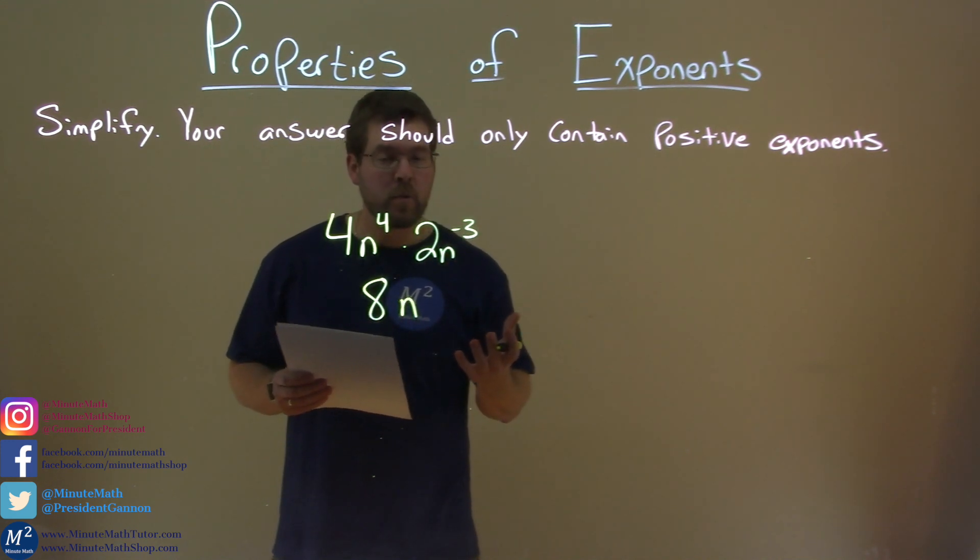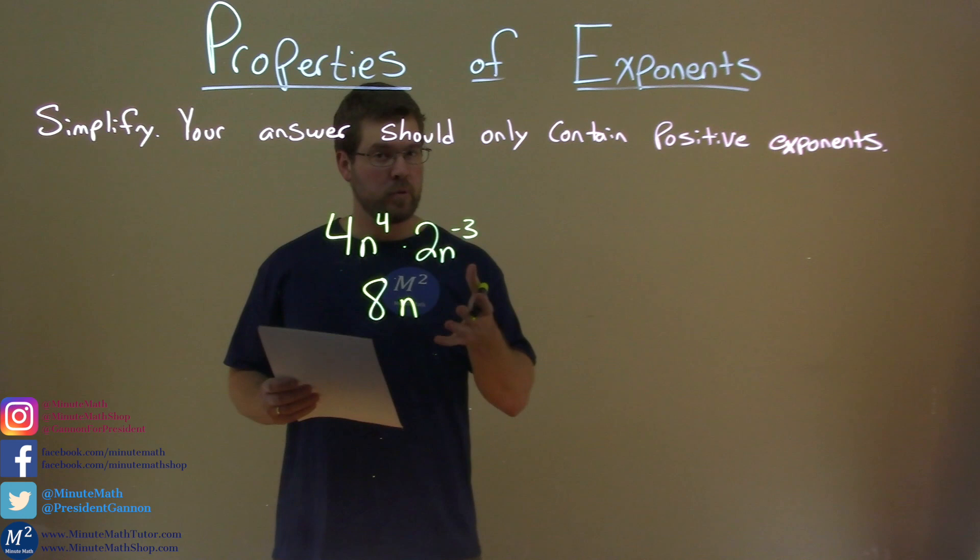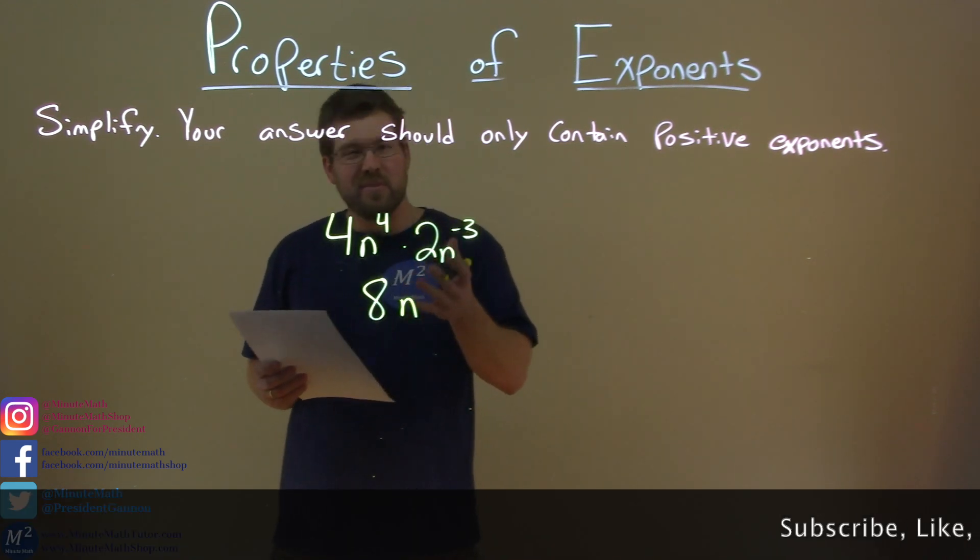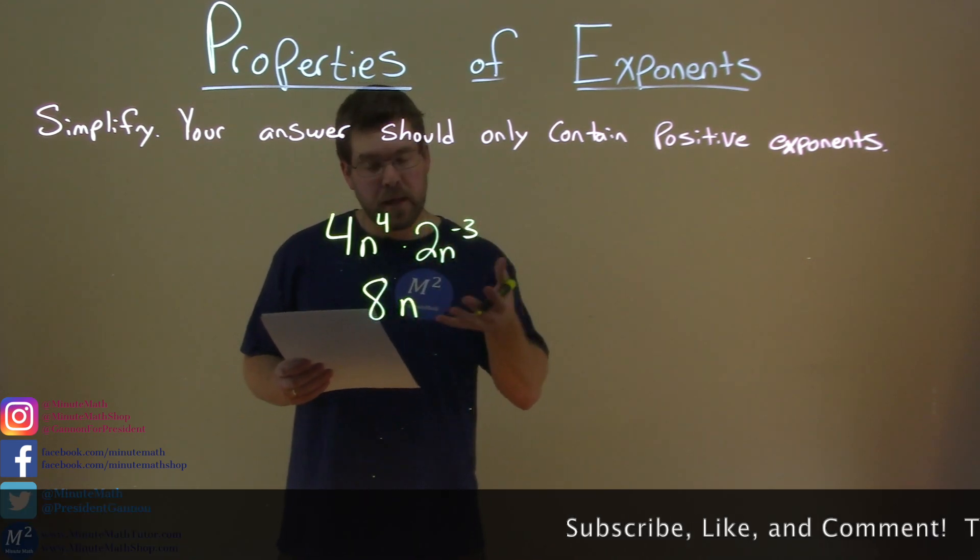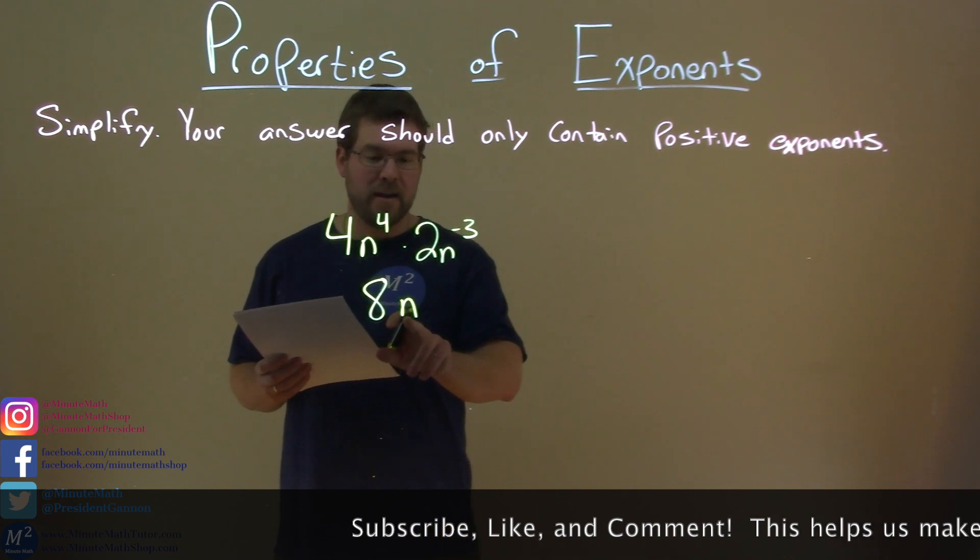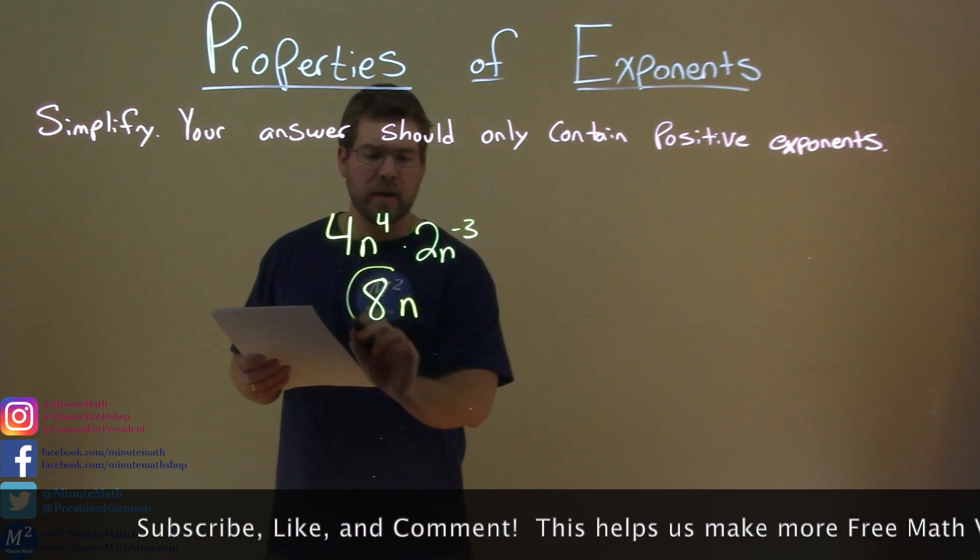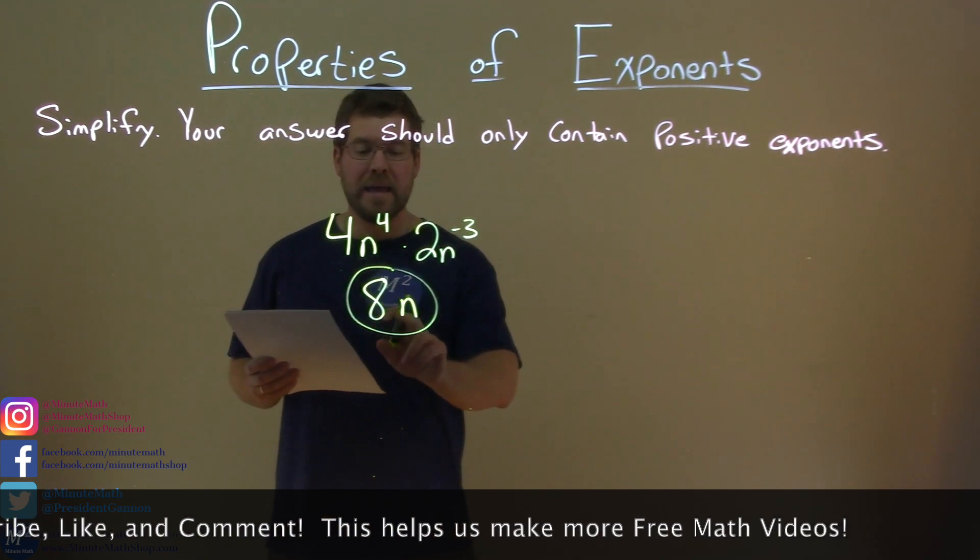Do we need to write the positive 1? No, we shouldn't really do that. If it's a 1 as an exponent, we can just leave it blank and just write n. So our final answer here is fairly simple: 8n.